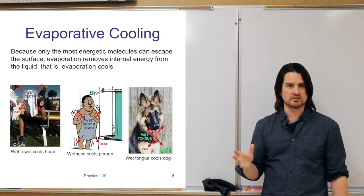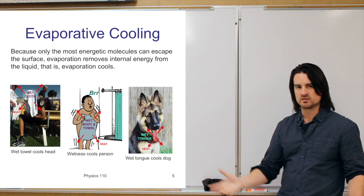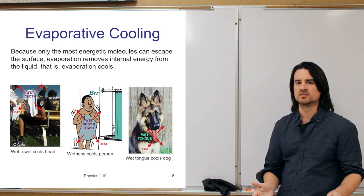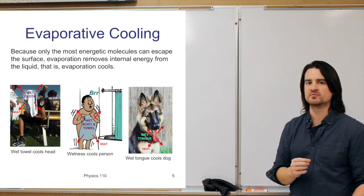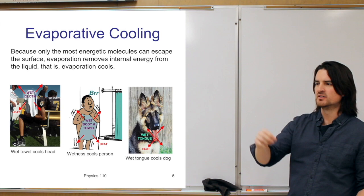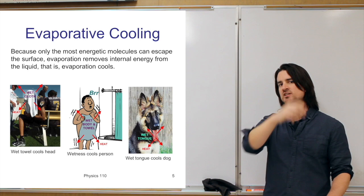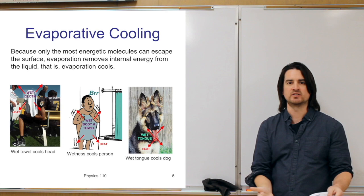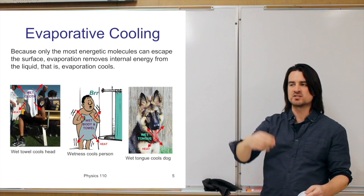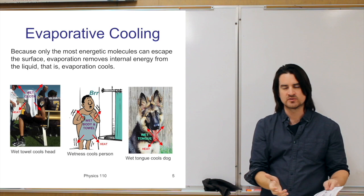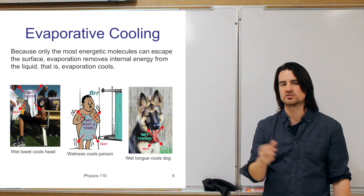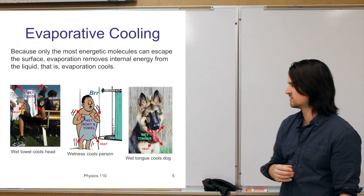The temperature of an object is essentially a measure of the average amount of energy or motion of all its atoms. If you take away the most energetic atoms — the ones moving fastest, the ones that are getting out — then overall, when the highest-energy ones leave, what you're left with is a lower average energy. That's another way of saying that evaporation takes energy away from the object and cools it down.